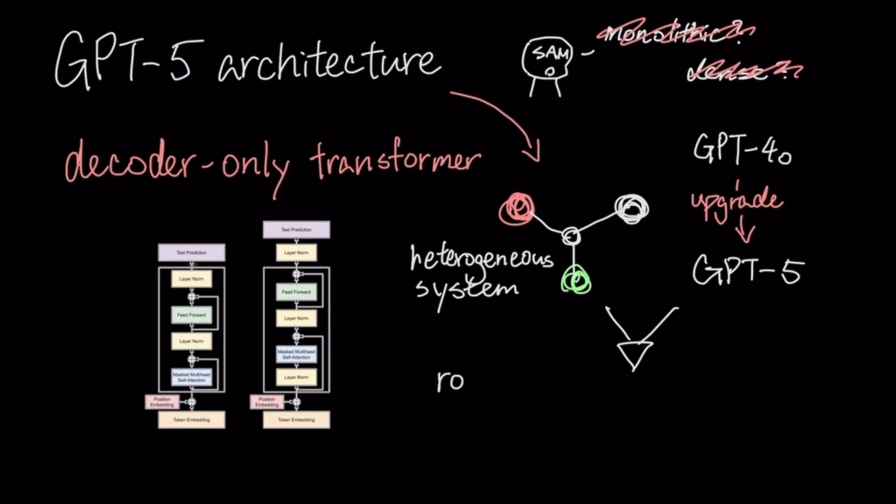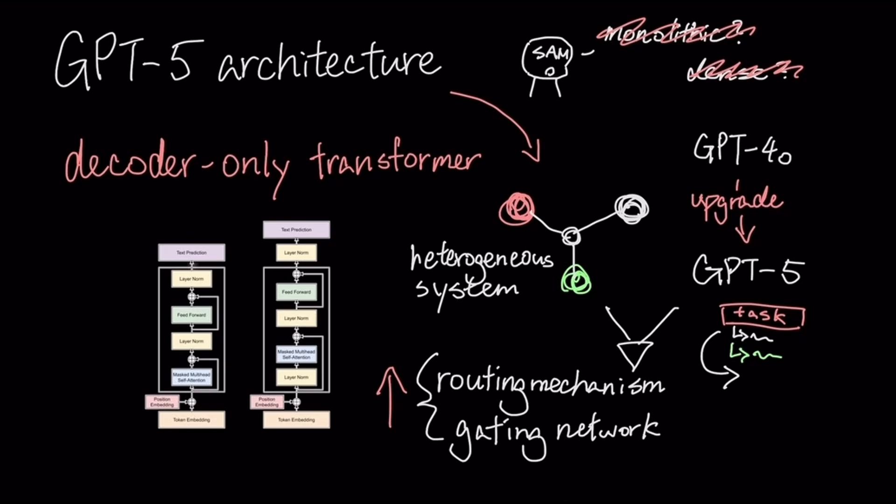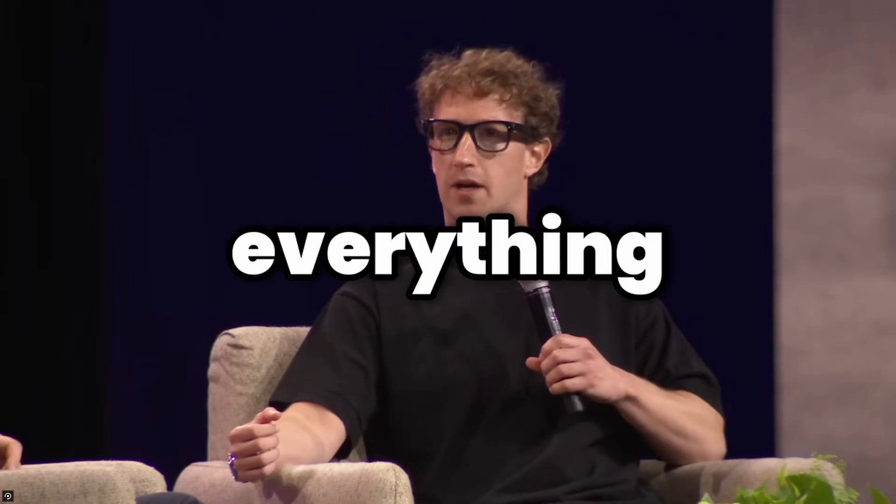This implies a high-level routing mechanism or gating network. This router would perform task decomposition on a user's prompt, routing each subtask to the optimal specialist model or tool. CEOs will call everything revolutionary, but the reality is different when you talk to the actual scientists.